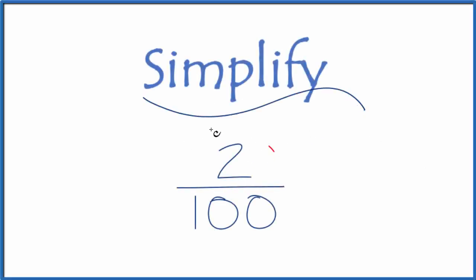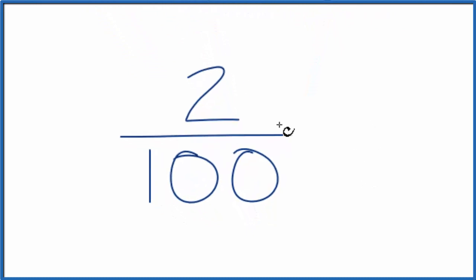Let's simplify the fraction 2 over 100. How do we reduce that to its lowest form? When I look at 2 over 100, I'm looking for a common divisor, something that goes into both 2 and 100 and gives us a whole number.